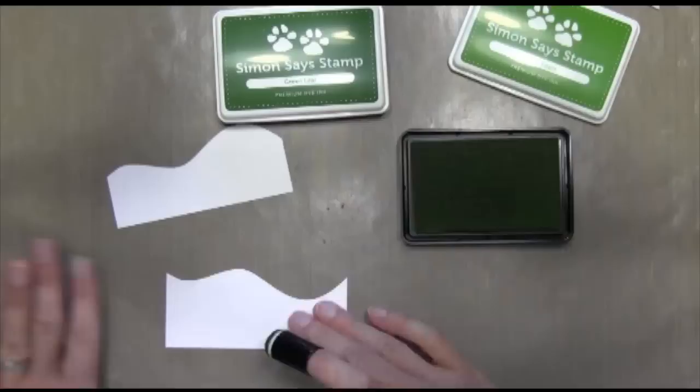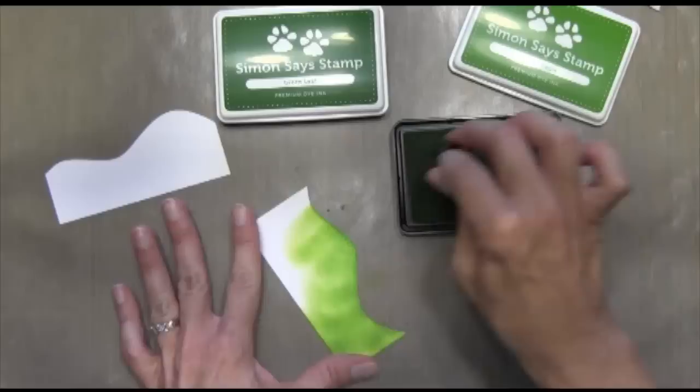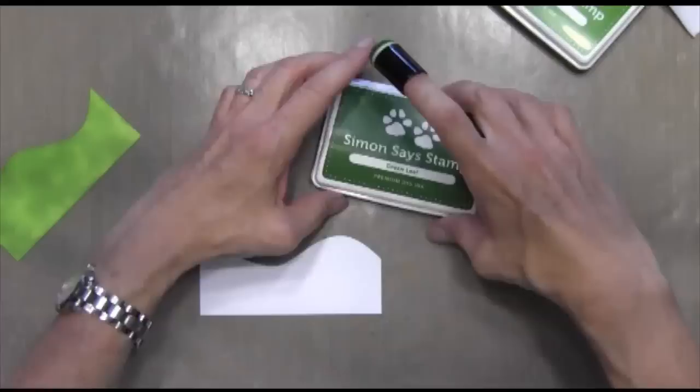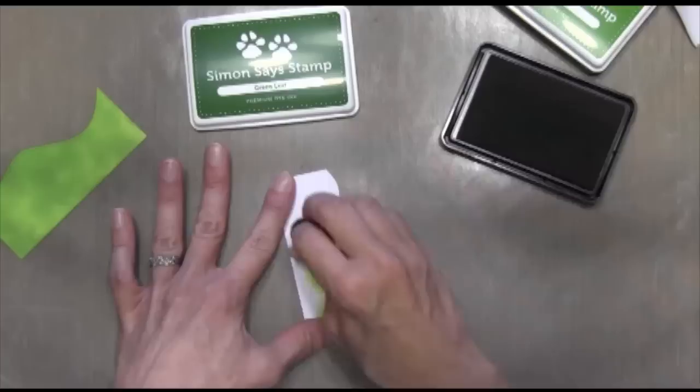I'm using Simon Says Stamp ink. I'm using two different greens. One is called Green Leaf, and one is Green Apple. I'll have to put it on my blog. That way I kind of get two different shades for my hills. I like this ink because it goes on similar to the Hero Arts Shadow Ink, in that it all blends out into one nice textured layer of color. You don't get a lot of dark and light areas. It's all very even.